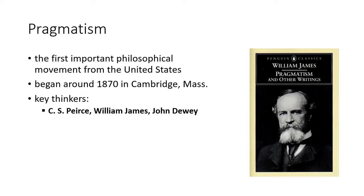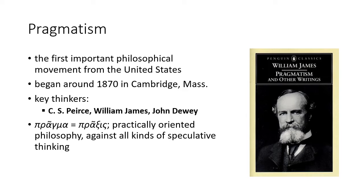Pragmatism was popular among many other thinkers. The key figures are not only Peirce, but also William James and John Dewey. You can see James's very influential book Pragmatism and Other Writings on this slide. The term pragmatism comes from the Greek term 'pragma,' which is synonymous with another Greek term 'praxis' — meaning that pragmatism is a practically oriented philosophy. It stands against all kinds of speculative thinking — it doesn't like metaphysics or speculative forms of religion. Pragmatists wanted to be useful for our everyday lives, and I think they were quite successful in that.